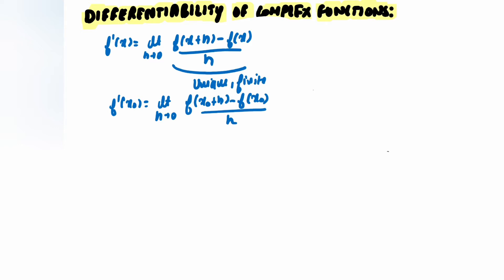Similarly, f'(x₀) equals the limit as x approaches x₀ of [f(x) - f(x₀)] / (x - x₀). If this limit is unique and finite, then we say our function is differentiable at point x₀. We have to do the same in the complex case.